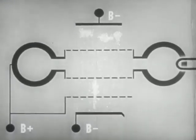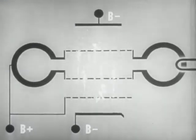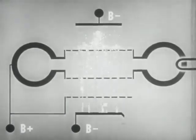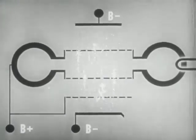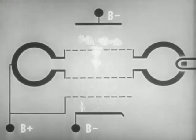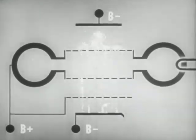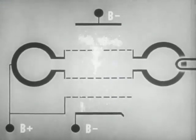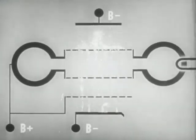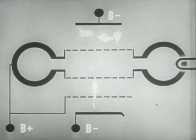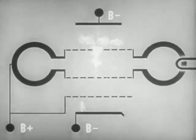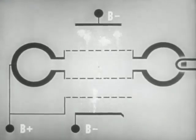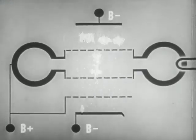The advantages of the reflex velocity modulated tube become apparent. By using cavities as the resonant elements of the circuit, we get great frequency stability as well as the required power. By modulating the velocity of the electrons, the transit time from cathode to anode becomes a working factor in the operation of the tube, rather than a limiting factor, as in an ordinary vacuum tube at high frequencies.